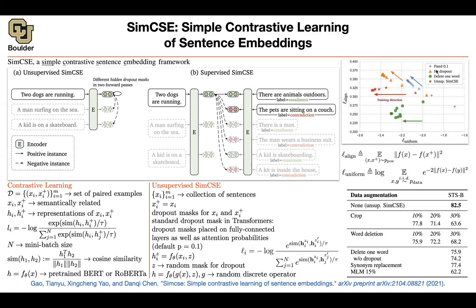Intuitively, you take a sentence, push it through the architecture with two different dropout masks, and get two different representations. You want those two representations to be as close as possible, while being very different from representations of other sentences. You're pulling similar sentences together and pushing different sentences apart. Similar sentences end up with close vectors, while different sentences are scattered uniformly across the embedding space.